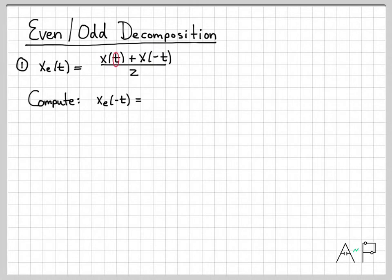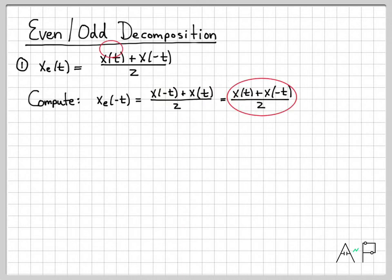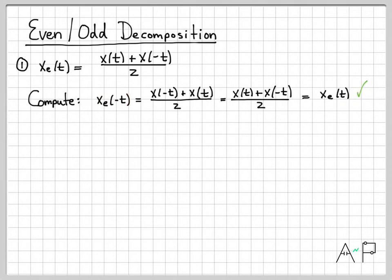To verify, let's replace every t with negative t and compute x_e(minus t). That gives x(minus t), and when we negate the second t, minus minus is plus, so we get x(t) — everything divided by 2. Since summation order doesn't matter, we can rearrange, and we see this is exactly equal to x_e(t). So we've shown that the time-reversed x_e(t) equals x_e(t), which by definition means it is indeed an even signal.